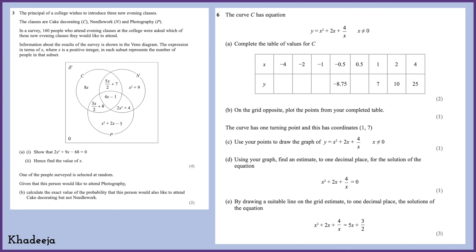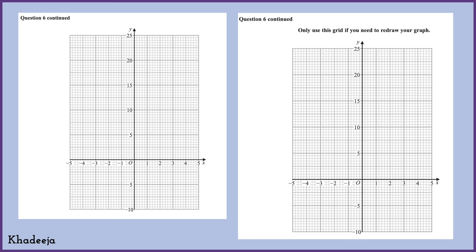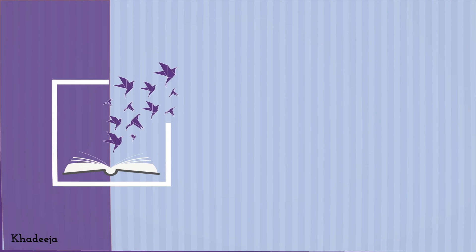Another type of question in Paper Two involves graphs. You get graph paper to draw on — the graph axes and scale are already provided, and you need to plot correctly. If you make a mistake on the first graph, there's another graph provided further down in the exam paper where you can redraw it. So those are some examples of what Paper Two questions look like.